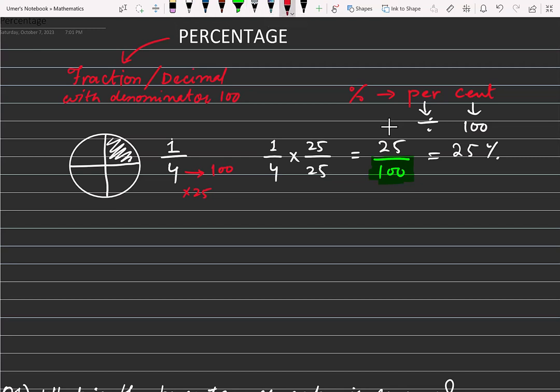What we can do is - like we had 1/4 - the alternate method is that I can multiply 1/4 by 100/100.